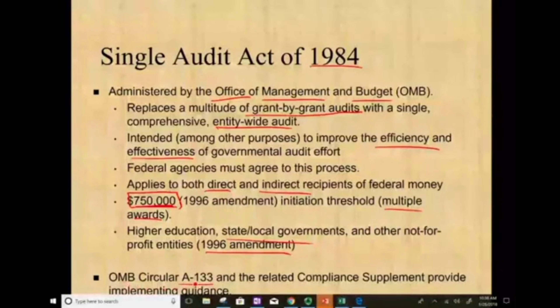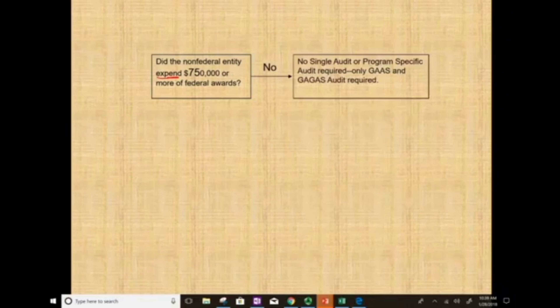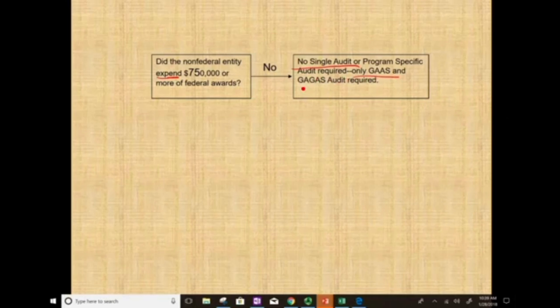Circular A-133 and related compliance provide implementation guidance — so auditors look to Circular A-133 for guidance. To qualify for the single audit: did the non-federal entity expend $750,000 or more of federal awards? If the entity did not spend $750,000 in federal awards, no single audit is required — only a GAGAS audit, the regular governmental audit standard.